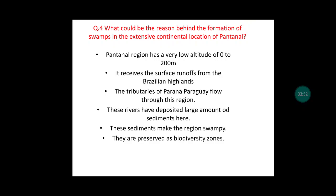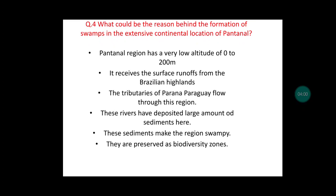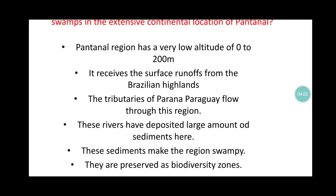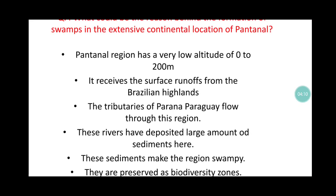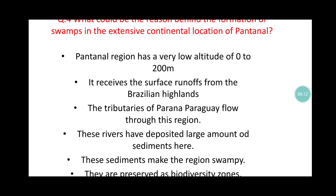The fourth question: what could be the reason behind the formation of swamps in the extensive continental location of the Pantanal? The Pantanal region has a very low altitude of 0 to 200 meters. It receives surface runoff from the Brazilian Highlands. The tributaries of the Parana and Paraguay rivers flow through this region and have deposited large amounts of sediments here. These sediments make the region swampy, and they are preserved as biodiversity zones.